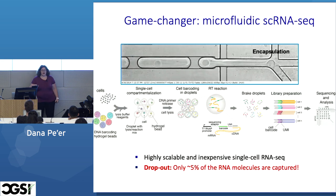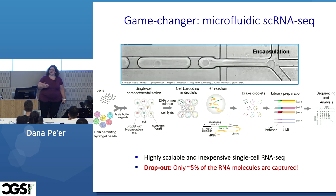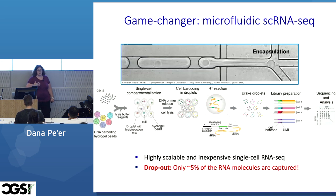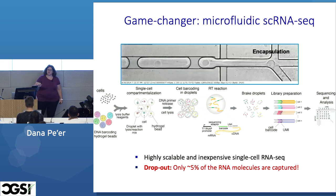The UMI is a random k-mer of sequences that also gets added on. This allows you to go back to the identity of the molecule. So after amplification — if you have some exponential amplification and you see many, many copies of a molecule — you can look at the UMI and say, I've seen 40 copies of this, but it actually comes from one molecule, so I can count it as one.